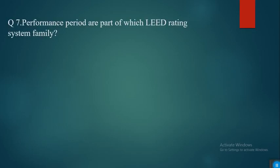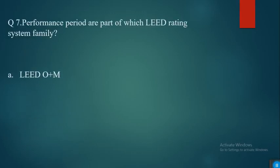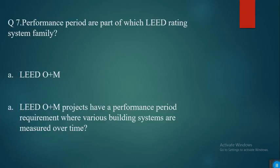Question seven: performance periods are part of which LEED rating system family? The options are: LEED Building Design and Construction, LEED Operations and Maintenance, LEED Neighborhood Design, or LEED Intelligent Design and Construction. The answer is LEED Operations and Maintenance, because LEED O+M projects have a performance period requirement where various building systems are measured over time.